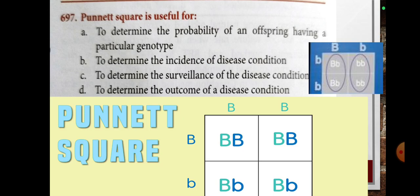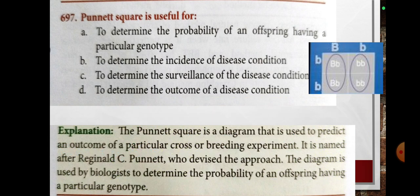Next, Punnett square is useful for: option A, to determine the probability of an offspring having a particular genotype; option B, to determine the incidence of a disease condition; option C, to determine the surveillance of a disease condition; option D, to determine the outcome. The answer is: to determine the probability of an offspring having a particular genotype.